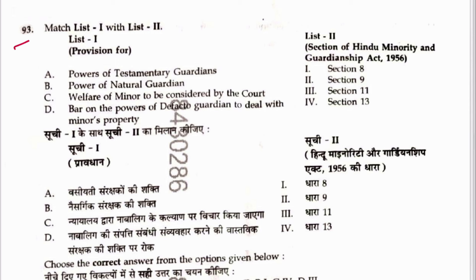Question 93: Match sections of the Hindu Minority and Guardianship Act. Welfare of child is paramount consideration — Section 13. Powers of natural guardian — Section 8. Power of testamentary guardian — Section 9. Powers of court to appoint or declare guardian — Section 11. The answer matches with option given; sequence gives the correct answer.